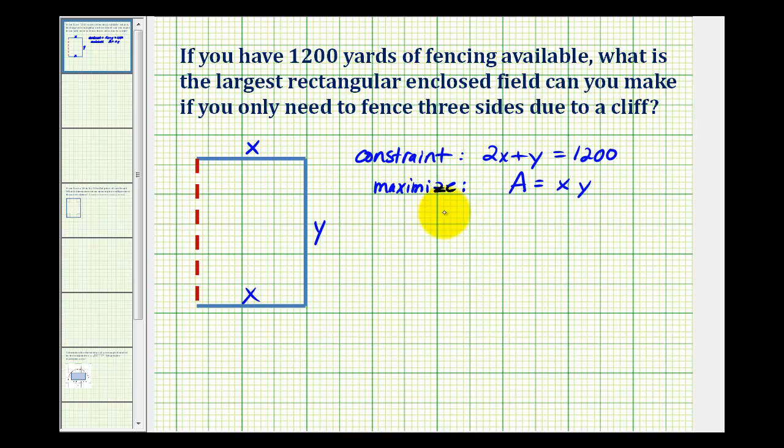So we know how to determine the maximum of an equation that's written in terms of one variable, but here we have it written in terms of two variables. So what we'll do is solve the constraint for x or y and then perform substitution into our area equation. Looking at our constraint, it's going to be easier if we solve this equation for y. The constraint would be y must equal 1,200 minus 2x.